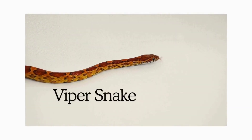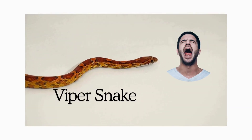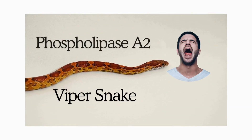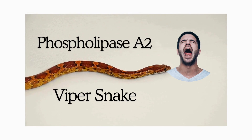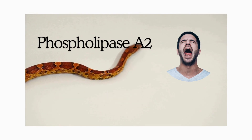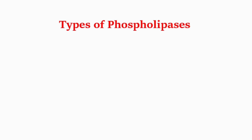This is the viper snake. What happens if it bites? What is the role of phospholipase A2 in viper snake venom? Let's find out. First, we'll see the types of phospholipases.